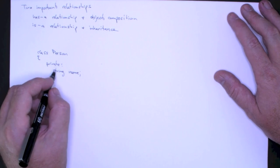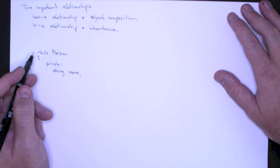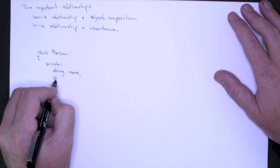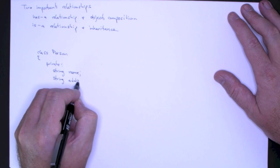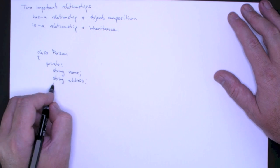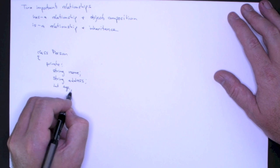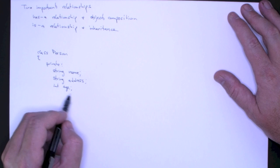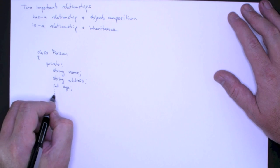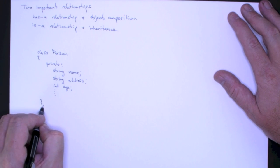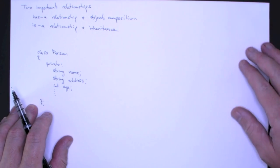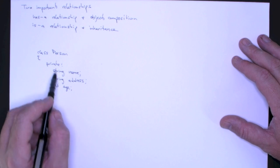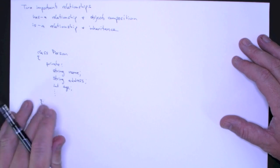We can keep going with this and say, what other attributes or properties does a person have? Maybe they have an address, maybe they have an age. They most certainly have an age; what's at issue is whether it's important to represent their age in a given application. We can keep doing this until we've defined all the necessary properties. So again, the important thing here is to say a person has a name, a person has an address, and they have an age.